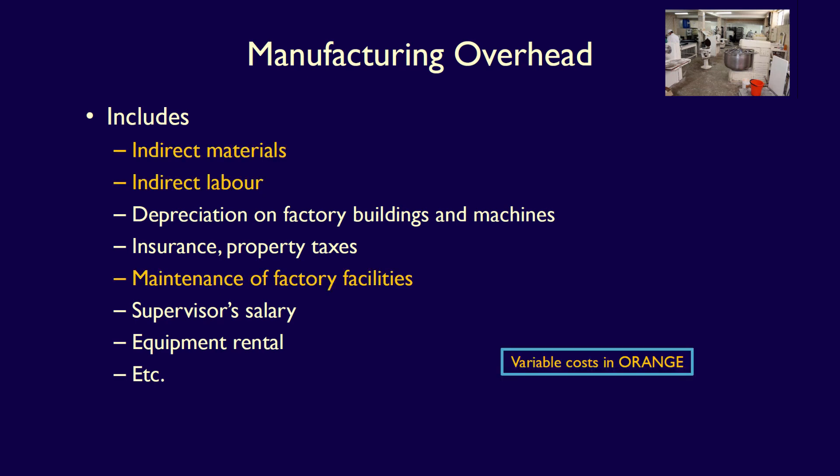For instance, indirect materials, indirect labor, and maintenance on the factory facilities — these are all variable in nature because the costs change with the level of activity. As production increases, these costs will increase, and as production decreases, the costs decrease.